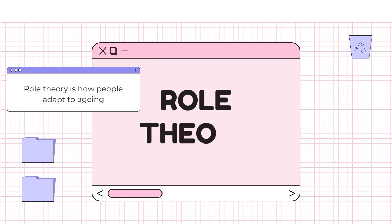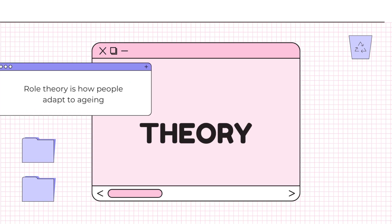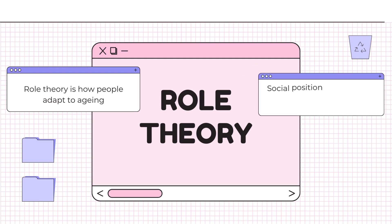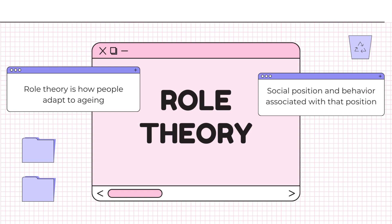Role theory is the first attempt to describe how people adapt to aging. Roles refer to the social position people have — for example, teacher, mother, and customer — and the behavior associated with that position.